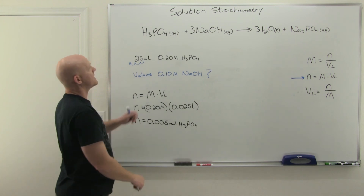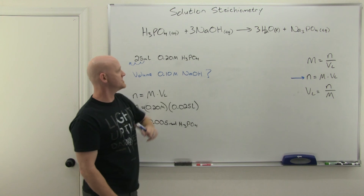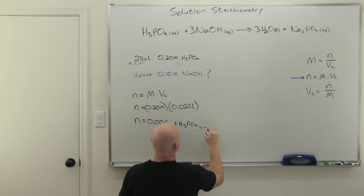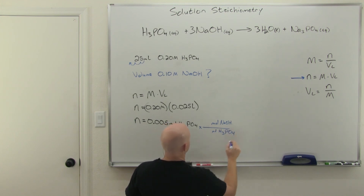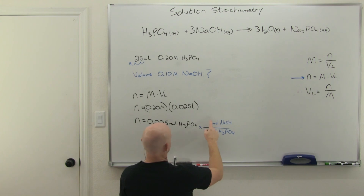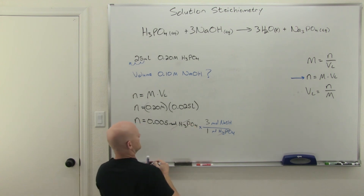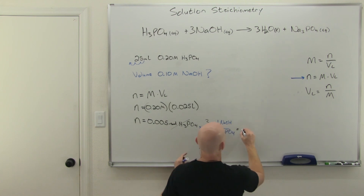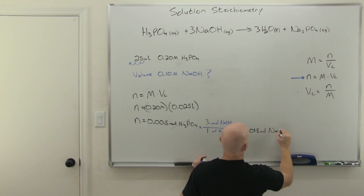Step 2: use the mole-to-mole ratio to convert to moles of NaOH. The balanced equation gives a 3:1 ratio — 3 moles of NaOH per 1 mole of H3PO4. So: 0.005 moles H3PO4 × (3 mol NaOH / 1 mol H3PO4) = 0.015 moles of NaOH.